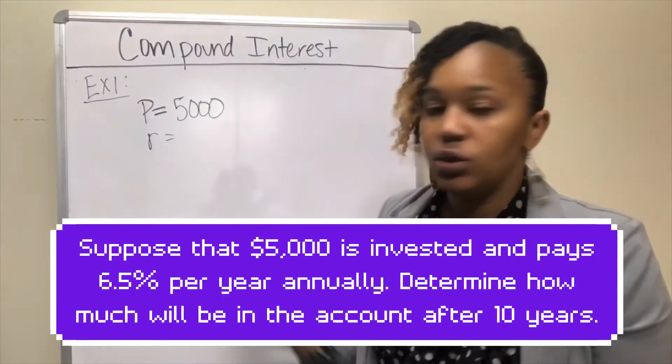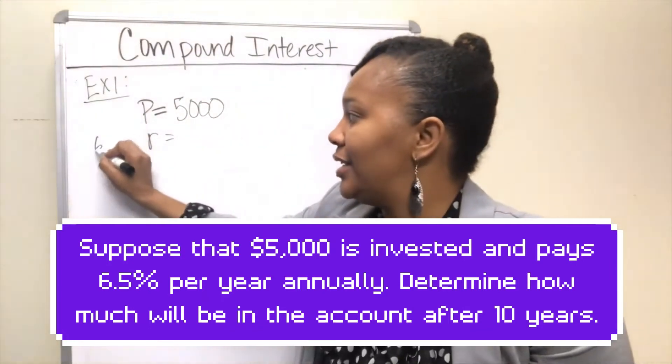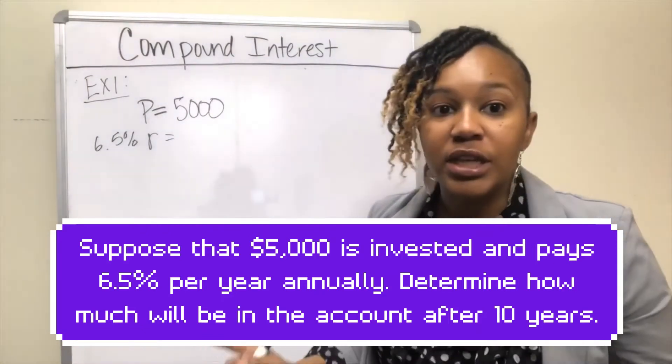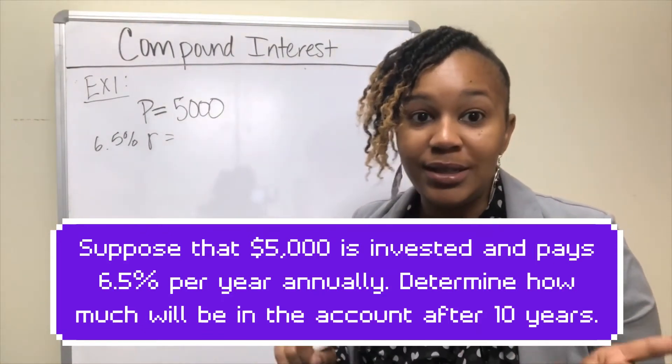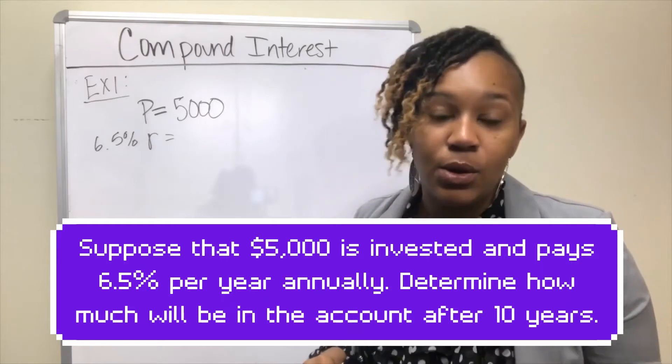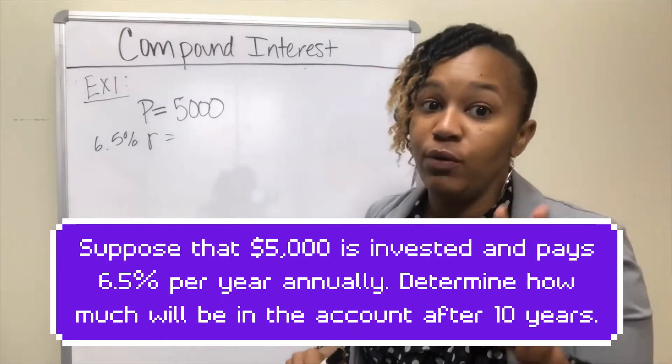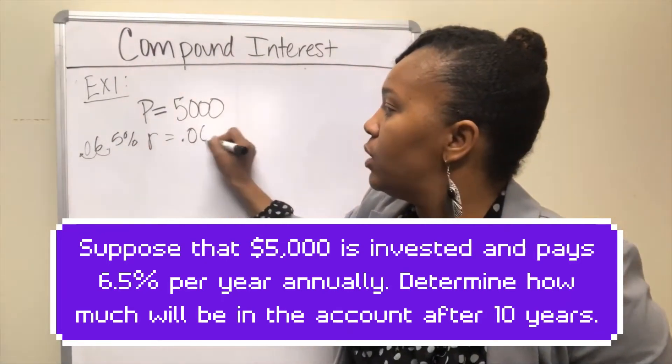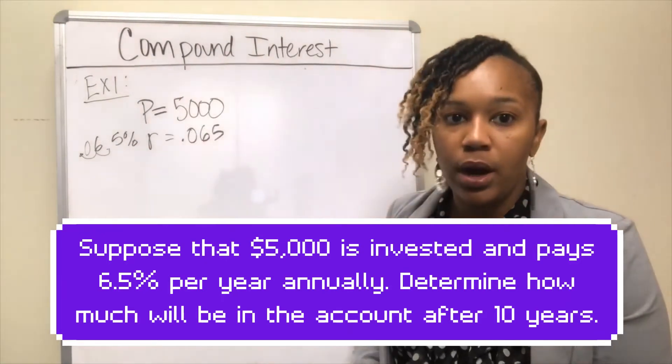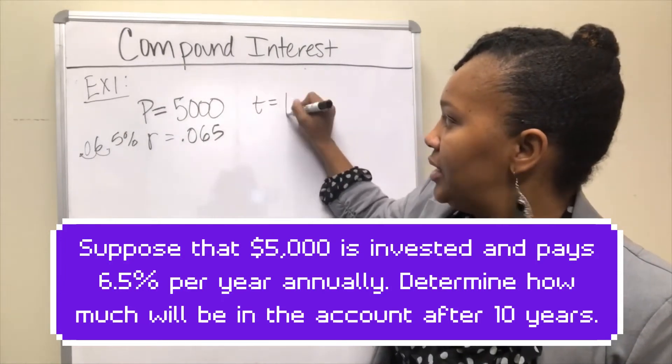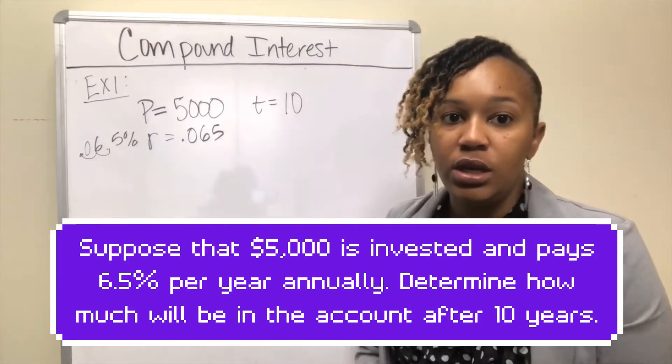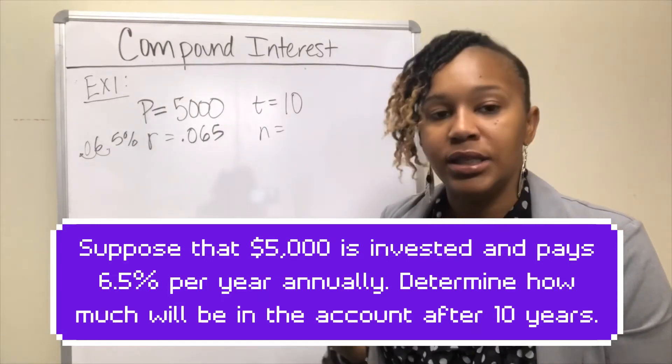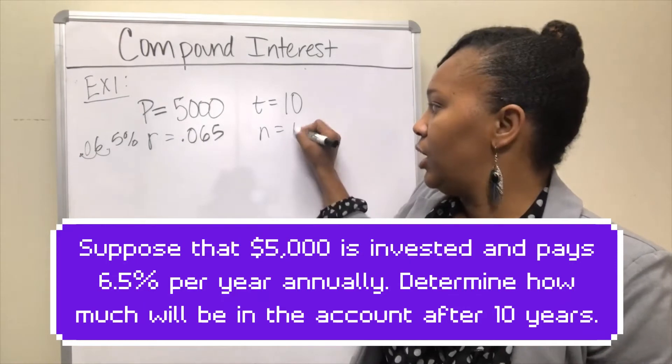R is the interest rate. Since the interest rate is 6.5%, we need to convert that to a decimal by moving the decimal two times to the left. So, like Beyoncé says, to the left, to the left, everything you own in a box to the left. You're going to move it two times to the left and you end up with 0.065. T is how long you're going to let the money sit in the account in years—10 years. N is the number of compound periods per year. Since interest is compounded annually, in this case your N would be 1.